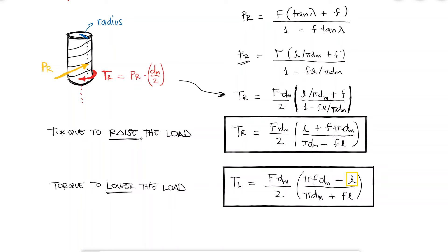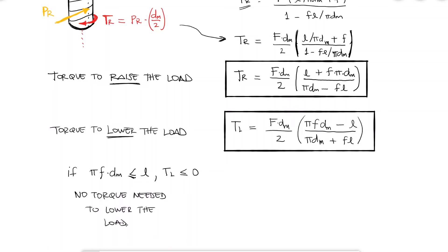In some cases where the lead is large or the friction is very low, the load will be large enough to make the screw spin without any external effort. When that happens, t l mathematically will be negative or zero. If the value for t l is positive, the screw is said to be self-locking, and the torque will be required to lower the load.